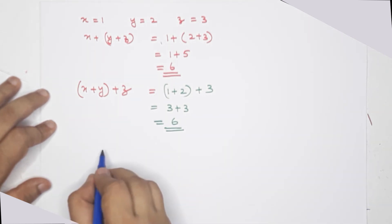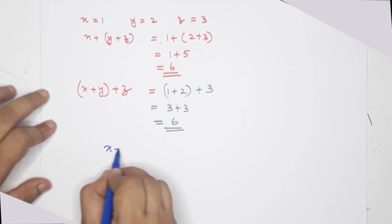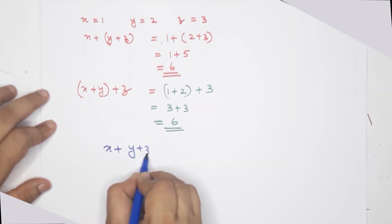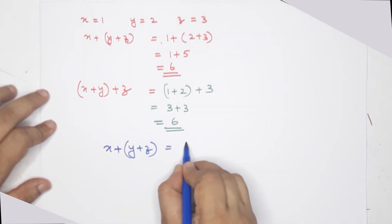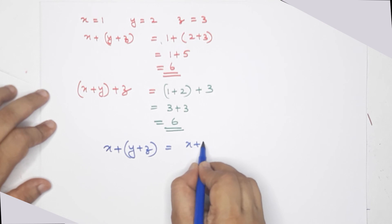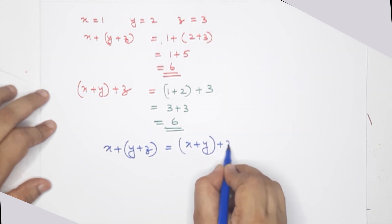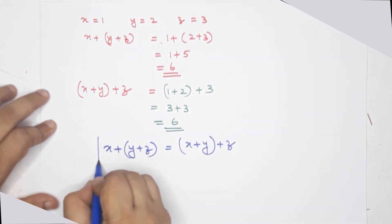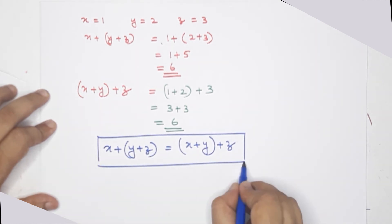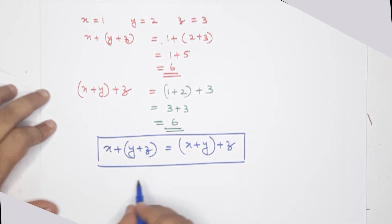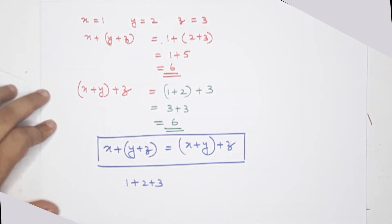This is x plus y plus z, equal to x plus y plus z. In addition, any 3 numbers — 1, 2, plus 3 — added in any order give the same result. This is the associative property of addition.